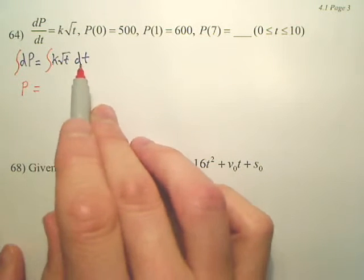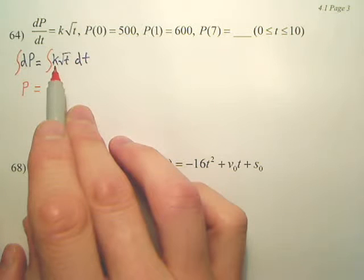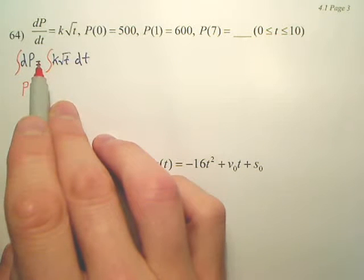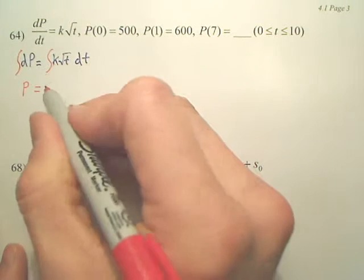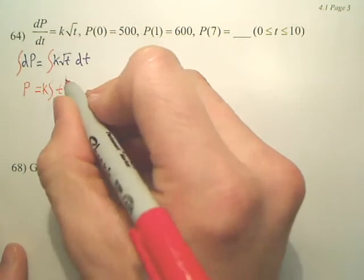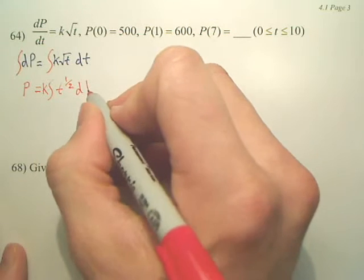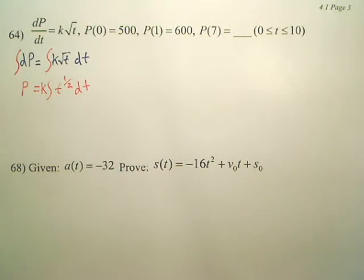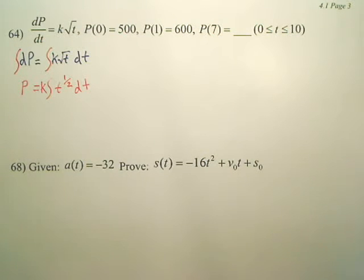The integral of this one. Well, k is a constant. Can I push the k out front? I'm going to push the k out front. I'm going to change t to the 1 half. Now k is a constant, it's a number, we can just push it out. Now can we integrate t here, dt?